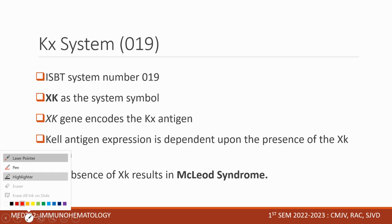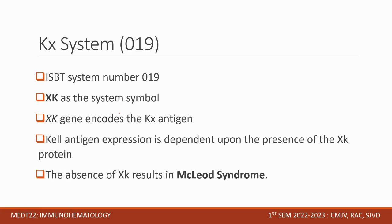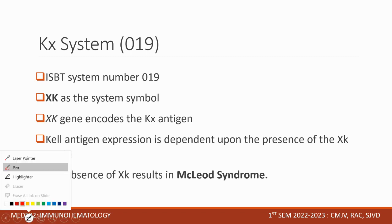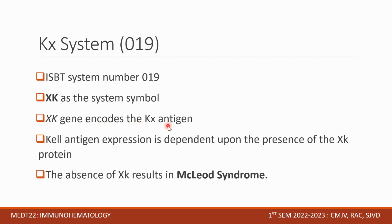We have the KX system, ISBT number 019, with system symbol XK. The XK gene encodes the Kx antigen. Kell antigen expression is dependent upon the presence of the Xk protein — if there is no Xk antigen, Kell antigen cannot be expressed. The absence of Xk results in McLeod syndrome.